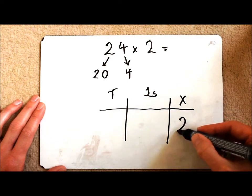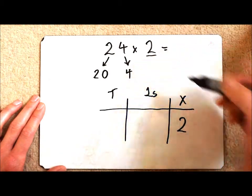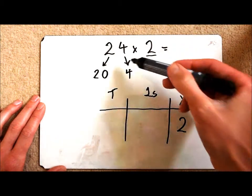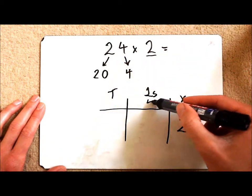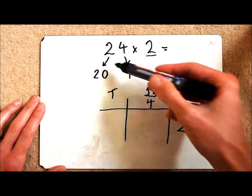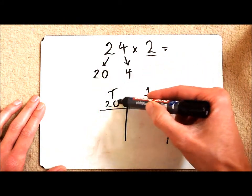So I'm multiplying by 2, that's this number over here. And then I have 4 ones so that goes into my ones column. I have 2 tens so that goes into my tens column.